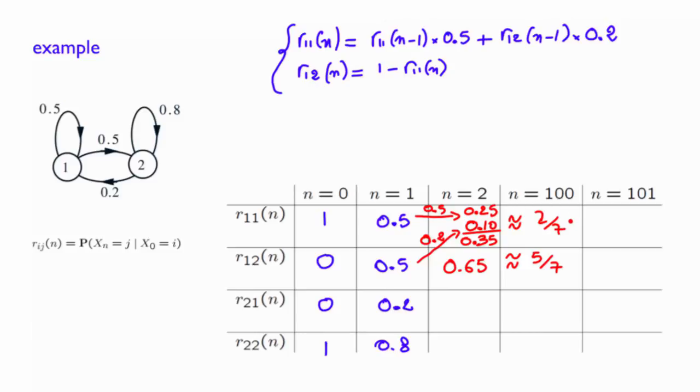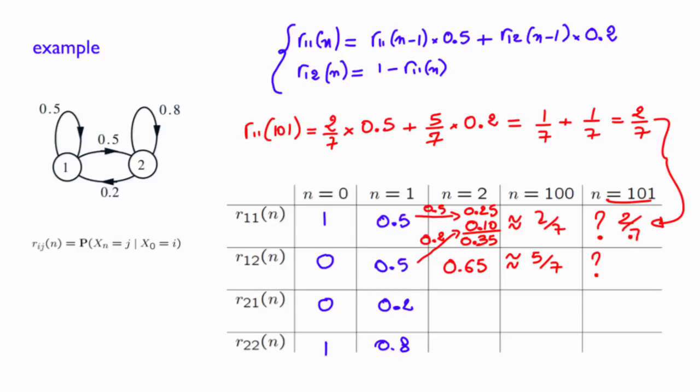Let us then apply the simple recursion in order to find the values here for n equals 101. r11 of 101 will be 2 over 7 times 0.5 plus 5 over 7 times 0.2, will be 1 over 7 for the first one plus 1 over 7 for the second one. And so we obtain again 2 over 7. And if you do the same calculation, you will end up with 5 over 7 here.